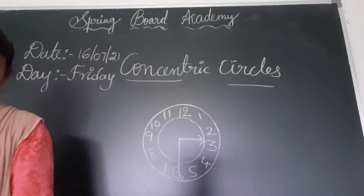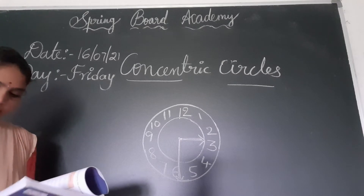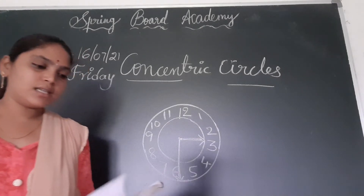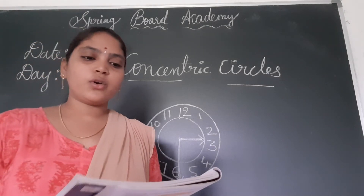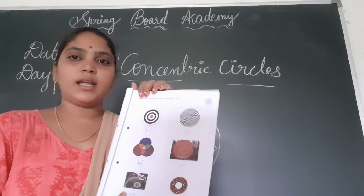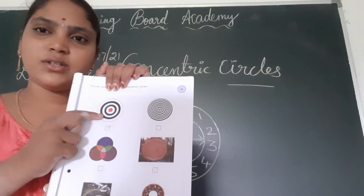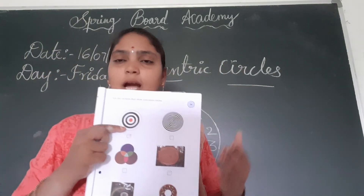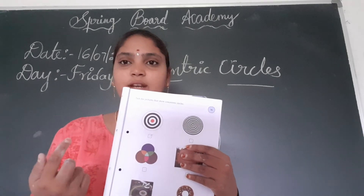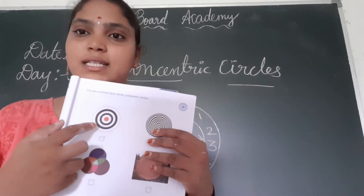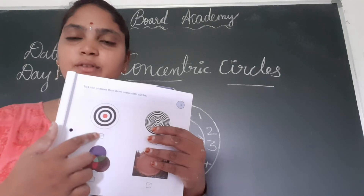Now open the companion book, page number 9. Tick the pictures that show concentric circles. You are given 6 pictures — identify which ones show concentric circles and tick them. To identify: circles with same center and different radius are concentric circles. The first one has circles with same center and different radius, so it is a concentric circle — tick it.